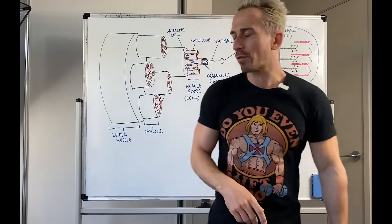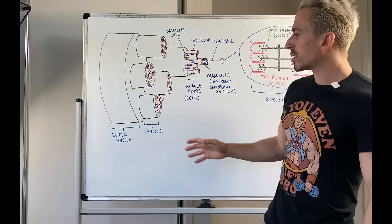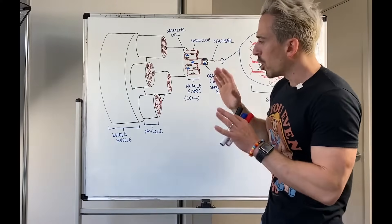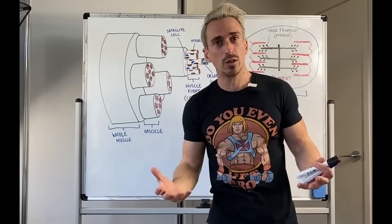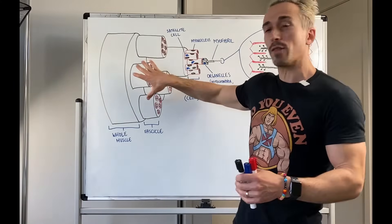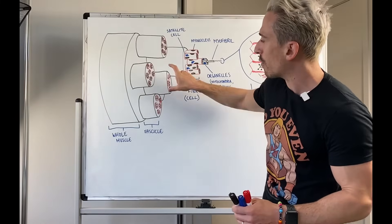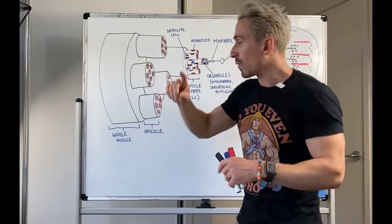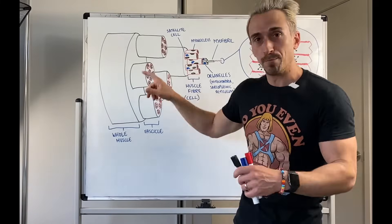But the first thing we need to go through is the skeletal muscle itself. So let's just say we have a whole muscle like a bicep for example. Now we know that this whole muscle is surrounded by connective tissue that we term fascia. And if we have a look inside of that whole muscle you'll find that there are these discrete areas called fascicles. They themselves are surrounded by connective tissue which we call perimysium.